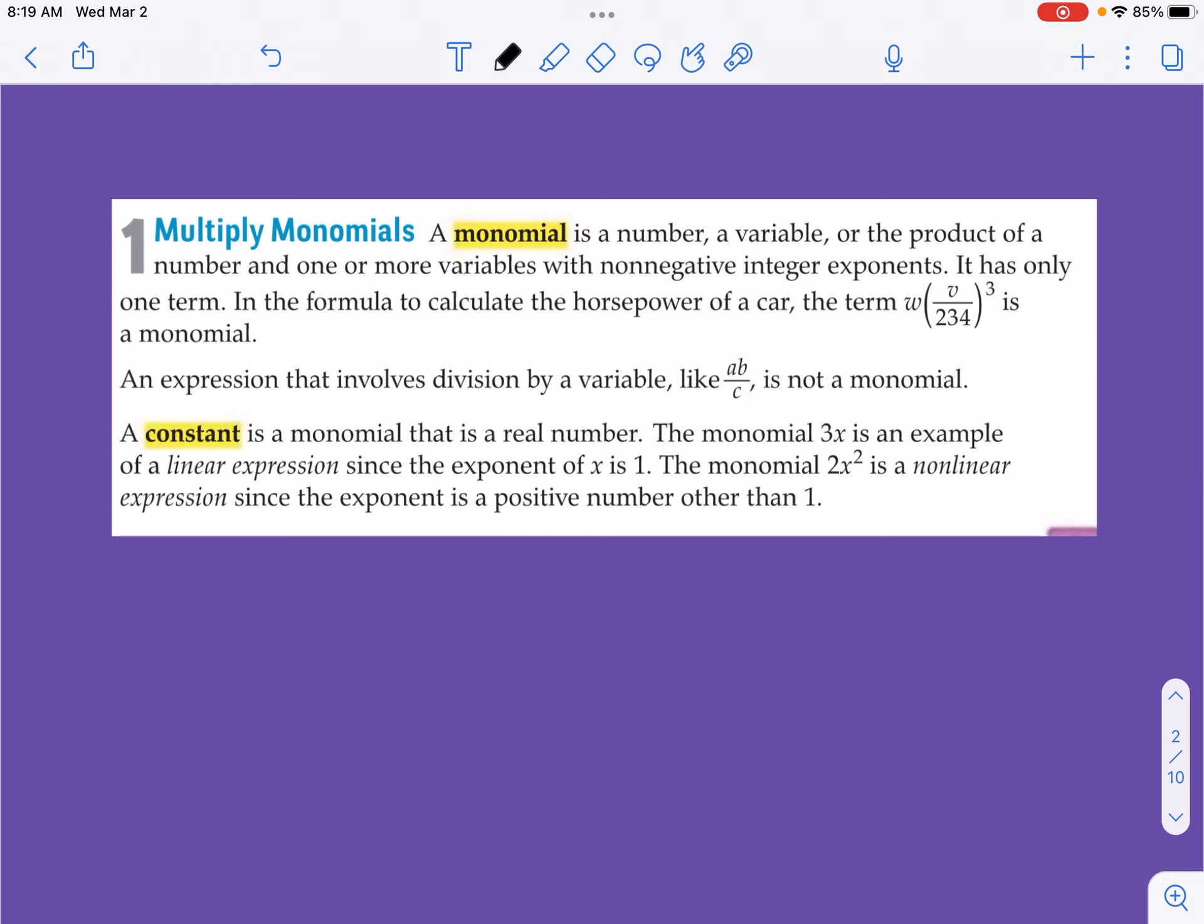And one of the other rules about the monomial is that the only operation that's happening in a monomial is multiplication. It may look like division with some of them, but that's because the division is disguising itself as a fraction with a number, with something that basically would be a coefficient. So it's a little different than when you're talking about actual real division where you're dividing a variable or something like that. If we look at this second line, it says an expression that involves division by a variable like A, B divided by C is not a monomial.